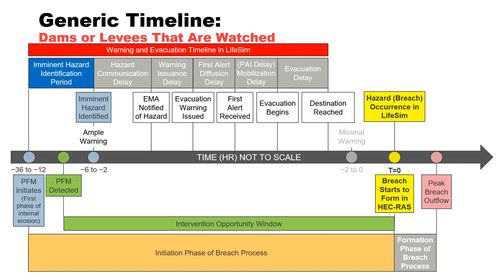Around the time when the peak breach outflow occurs is the completion of the formation phase of the breach process. Breach formation time in HEC-RAS was previously discussed in this presentation. The breach then widens due to erosion of the breach side walls.